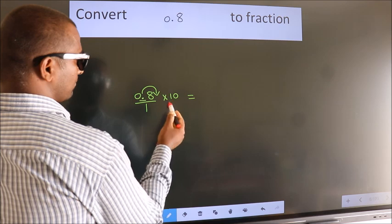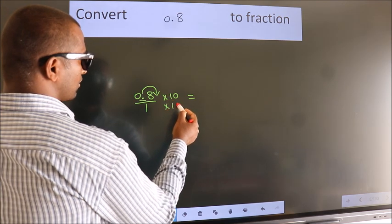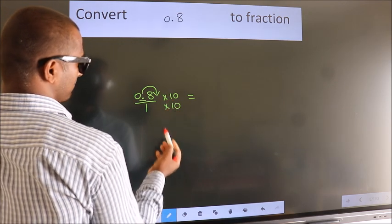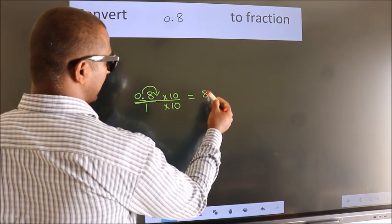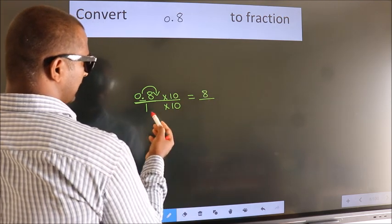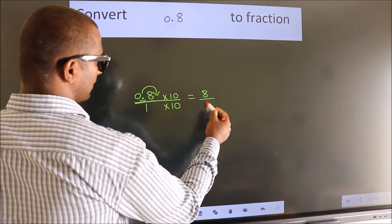Whatever you are multiplying in the numerator, in the denominator also you should multiply by the same. Now 0.8 into 10, we get 8. In the denominator, 1 into 10 is 10.